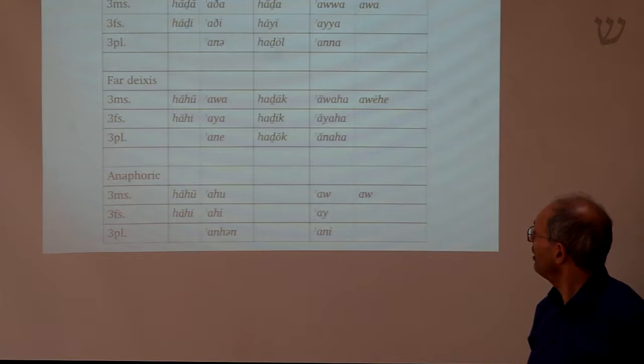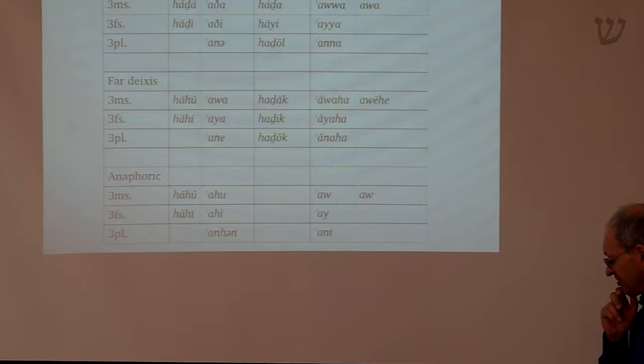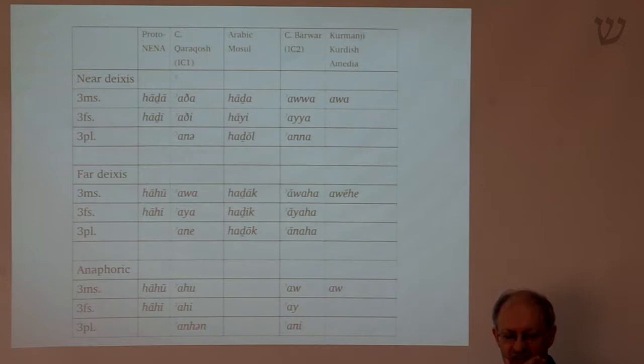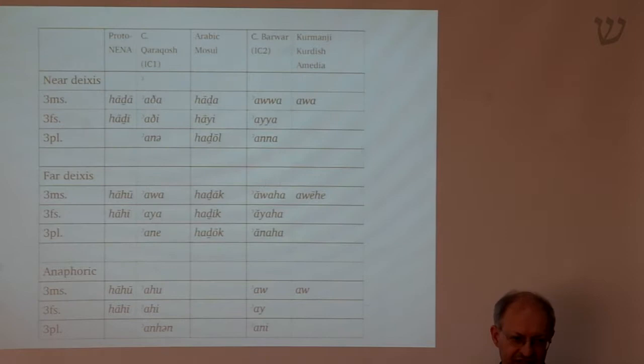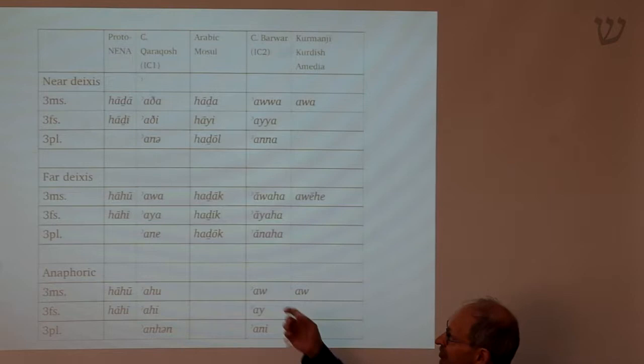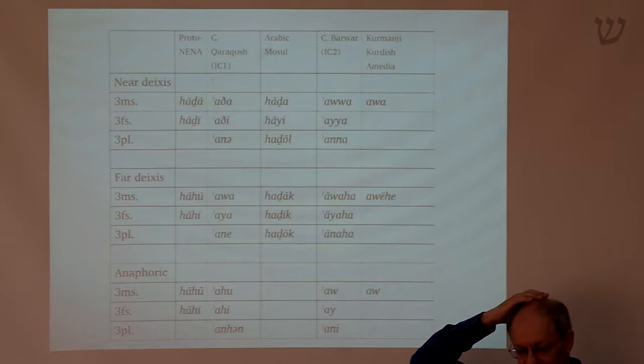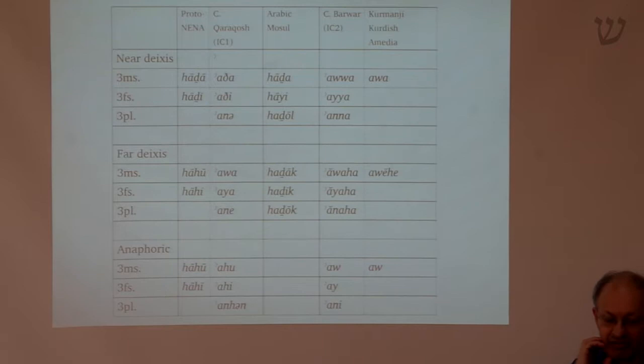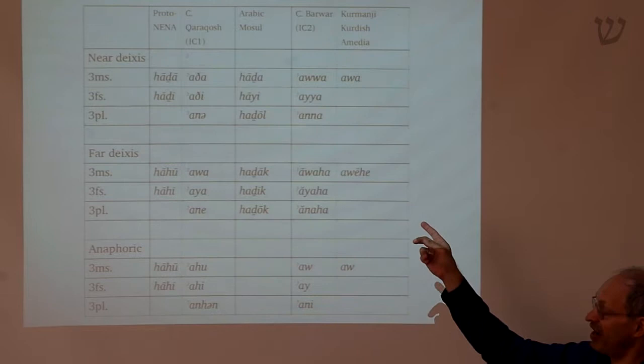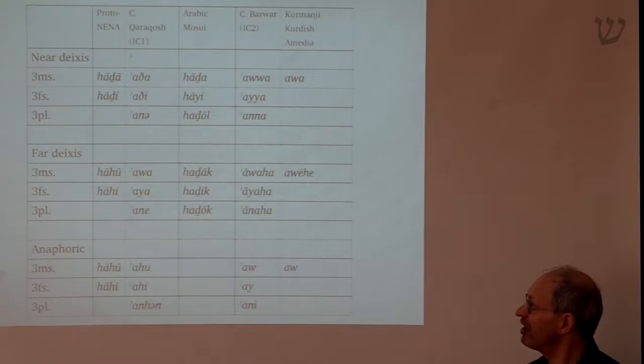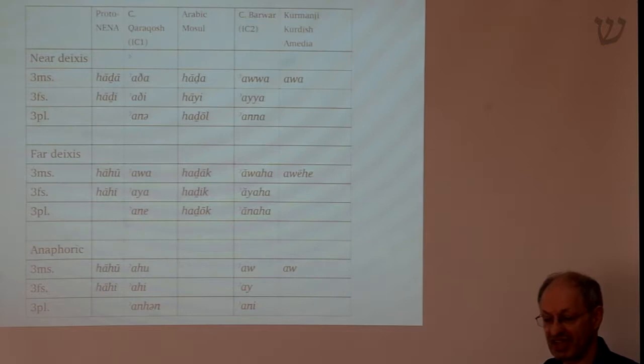Historically, there's a lot of diversity in the form of the demonstrative pronouns, but I want to show you how languages in contact have had an influence. Let's take Kharakosh, on the Mosul plain. The near-deixis pronoun 'haadha' can be traced back quite legitimately to what I call a proto-NENA form — a proto-Aramaic form 'haadha' — which can be reconstructed as a genuine Aramaic form. In Arabic dialects, and specifically the Arabic dialects of Mosul, the Arabic word for 'this' in the third masculine singular is identical: 'haadha'.